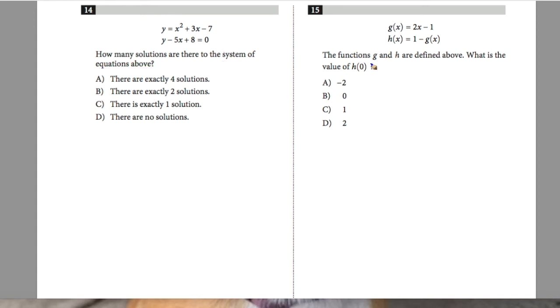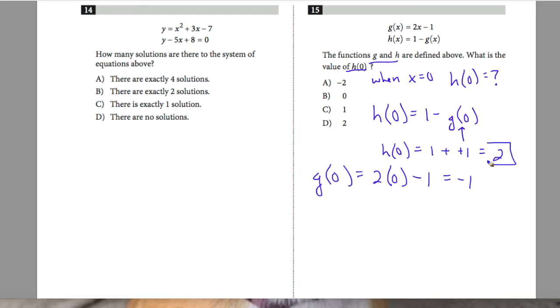Question 15 says the functions g and h are defined above, what is the value of h of 0? When x is 0, what is the value of h overall? I see that h of 0, taking this expression as function, is going to equal 1 minus g of 0, and my g of 0 I'm going to get from my other expression. So my g of 0 equals my 2 times 0 minus 1, this will equal negative 1. So my g of 0 equals negative 1, I'm going to plug this in. So my h of 0 is going to equal 1 minus negative 1, which would turn into 1 plus 1, which would give me 2. So h of 0 equals 2, therefore making 15 d.